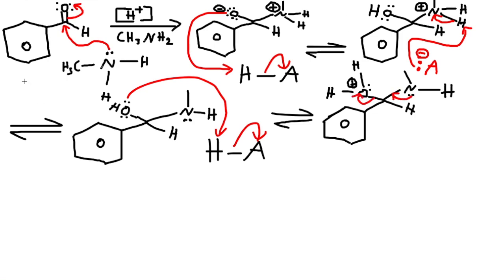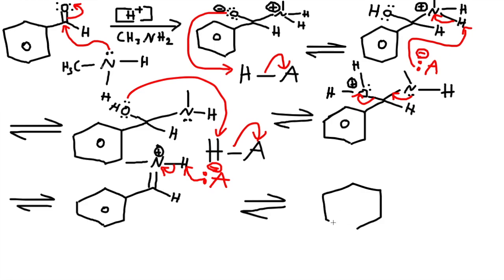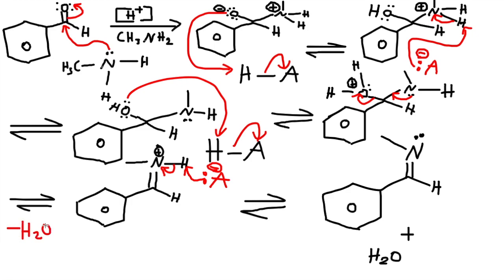We now have water with a positive charge, and nitrogen has a lone pair. A double bond forms and we kick off the water — this is exactly where we get the loss of water. Now we have nitrogen with a double bond and a positive charge. The acid comes back one more time, grabs the hydrogen connected to nitrogen, and gives off the electrons to make it stable. The final product is the imine, and water is a byproduct.